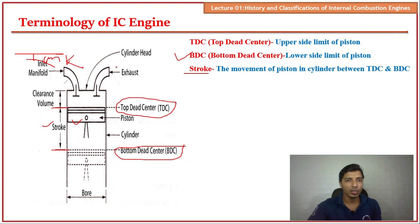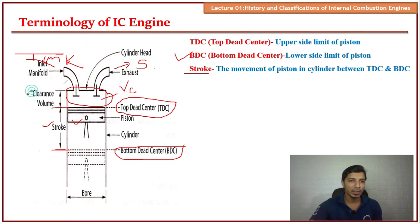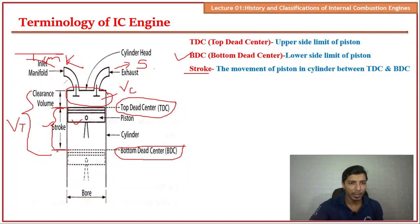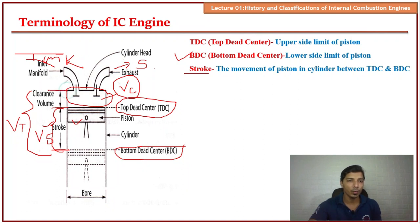The exhaust manifold is connected to the silencer. There are three types of volumes in an engine: clearance volume (Vc), which is the volume at TDC; total volume (Vt), which is the full volume of the cylinder; and swept volume (Vs), which is the volume between TDC and BDC. Swept volume is the volume swept by the piston when moving from TDC to BDC.